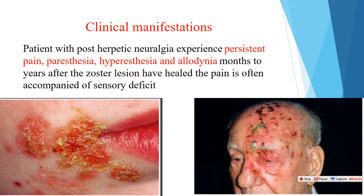Clinical manifestations of post-herpetic neuralgia: patients may experience persistent pain, paraesthesia (burning sensation), or paroxysmal pain. Hypersensitivity means pain increases in response to stimuli. Allodynia means the patient suffers from pain even from stimuli that do not normally cause pain — such as simple touching of the skin causing severe pain. This pain persists for months to years after the zoster lesions have healed, and is often accompanied by sensory deficit.